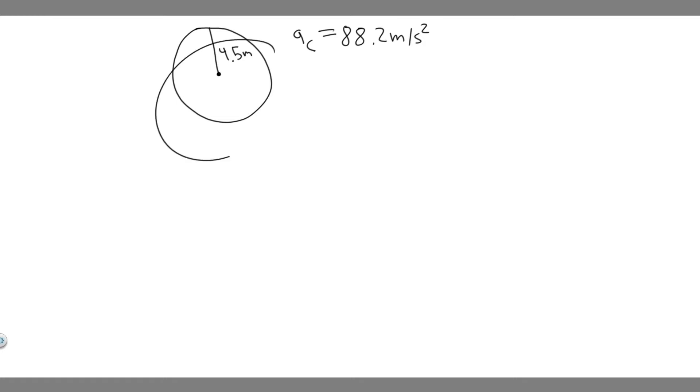So basically, you have this centrifuge with a radius of 4.5 meters, and we know the maximum acceleration a person can experience within it is 88.2 meters per second squared. To solve this problem, the easiest way is starting with B, and we're going to use the information from B to solve A. So let's start with B.